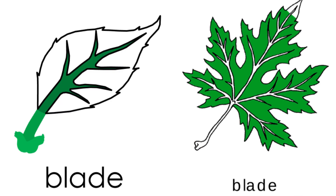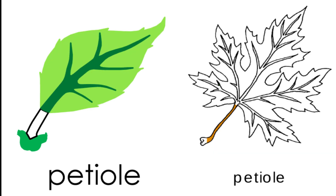The blade is the part of the leaf that is the thin, flat, broad area of the leaf. The petiole is the part of the leaf that joins the blade to the stem. The petiole is narrow and hard.